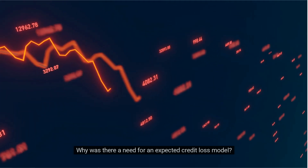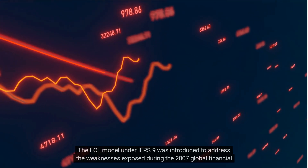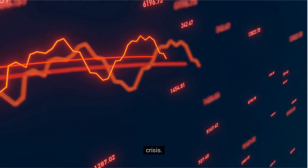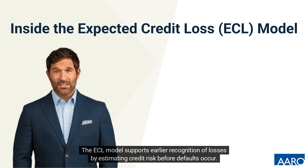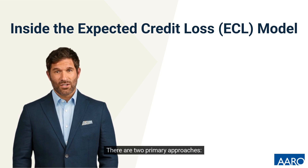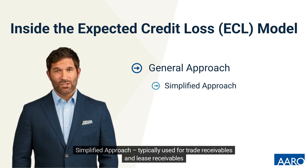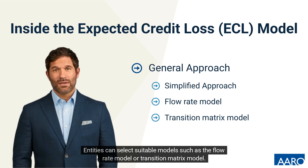Why was there a need for an expected credit loss model? The ECL model under IFRS 9 was introduced to address the weaknesses exposed during the 2007 global financial crisis. The ECL model supports earlier recognition of losses by estimating credit risk before defaults occur. There are two primary approaches: the general approach for most financial assets, and the simplified approach, typically used for trade receivables and lease receivables. Entities can select suitable models such as the flow rate model or transition matrix model.